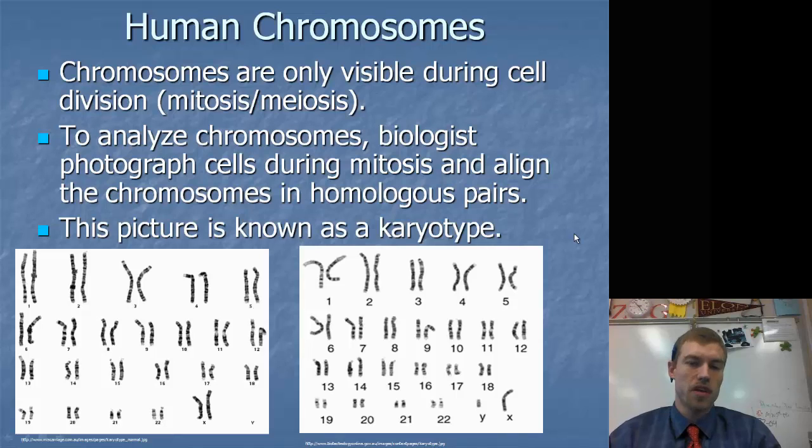First, before we get into sex-linked traits, we need to talk about chromosomes. Remember, chromosomes are only visible during mitosis or meiosis because that's when they condense. Usually they are just hanging out in the cell as chromatin. To analyze chromosomes, biologists take pictures during mitosis or meiosis and align them into their homologous pairs. This picture is known as a karyotype.